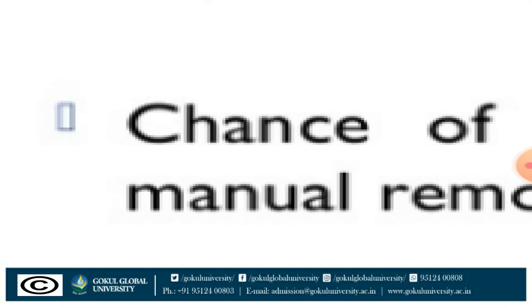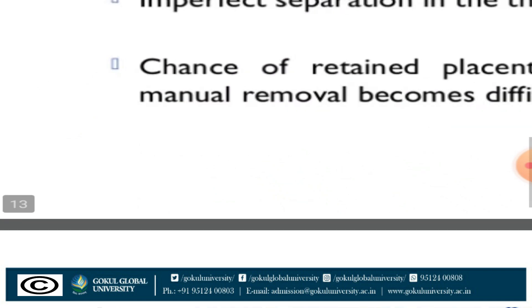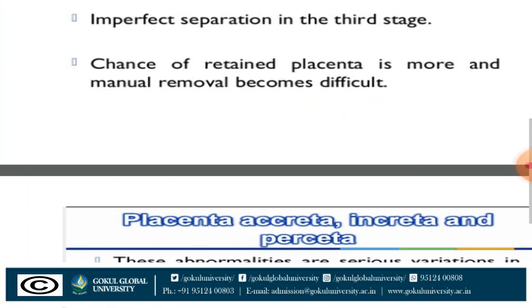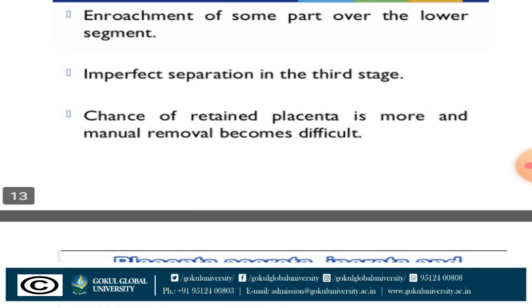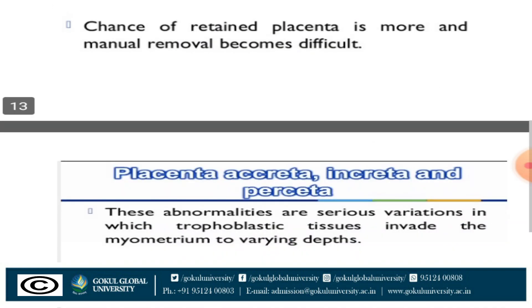If placenta membranacea is present, the chances of retained placenta increase, meaning some part or lobe of the placenta is retained in the uterus. For the retained part, we can treat through manual removal of the placenta. However, if placenta membranacea is present, difficulty arises during manual removal. So this is the rarest and most dangerous condition among placental abnormalities.